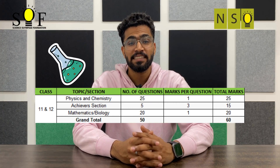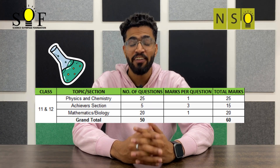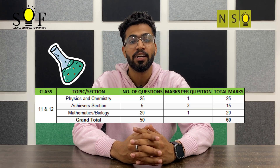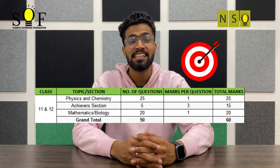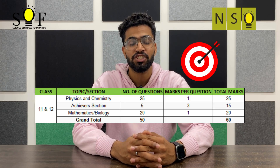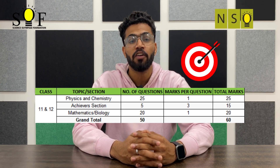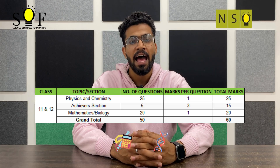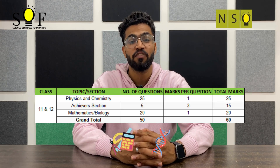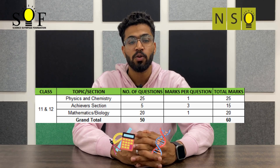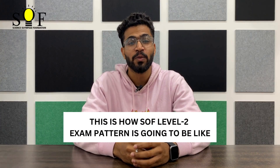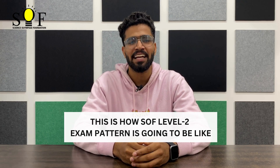For classes 11 and 12, Physics and Chemistry section will have 25 questions carrying 1 mark each, making this section a total of 25 marks. Achievers section will have 5 questions carrying 3 marks each, totalling 15 marks. Mathematics or Biology section will have 20 questions carrying 1 mark each, making this section a total of 20 marks. So this is how SF Level 2 exam pattern is going to be like.